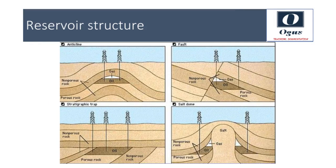Let us see what types of rock structures lead to the formation of an oil and gas reservoir. A trap is a geological structure affecting the reservoir rock and cap rock of a petroleum system, allowing the accumulation of hydrocarbons in a reservoir. Traps can be of two types: stratigraphic or structural.